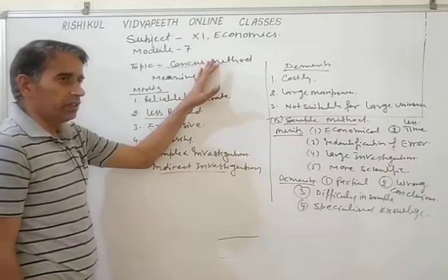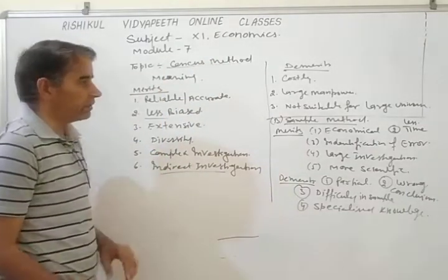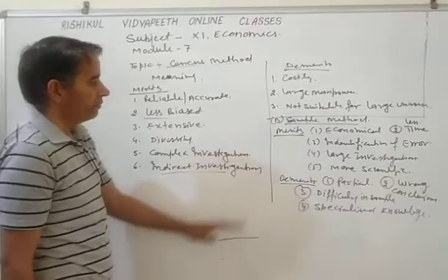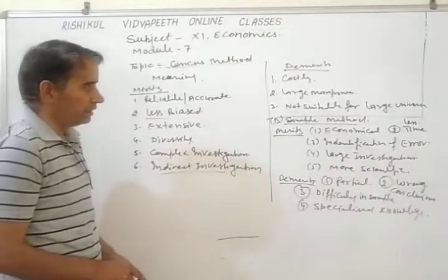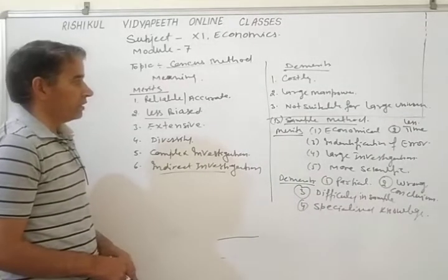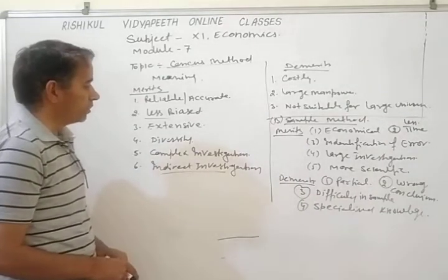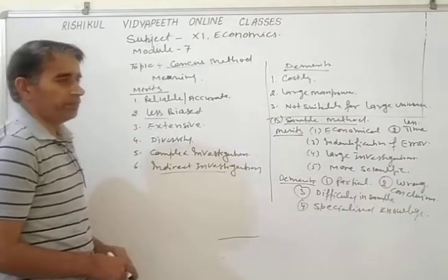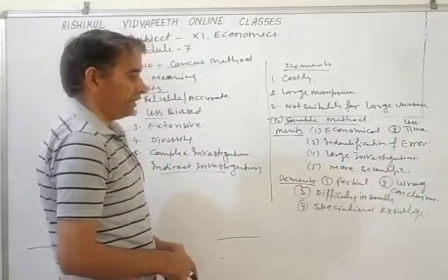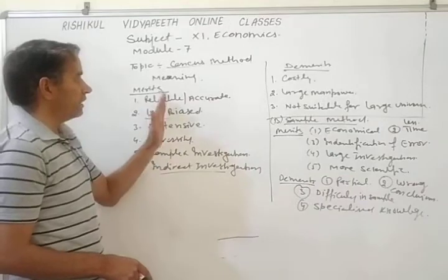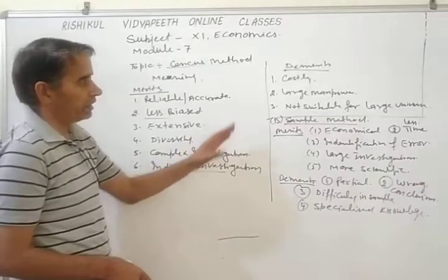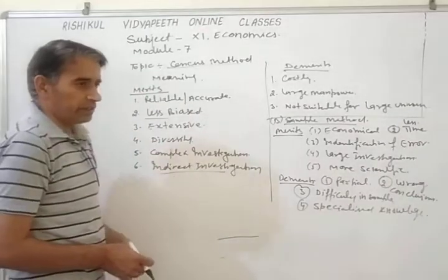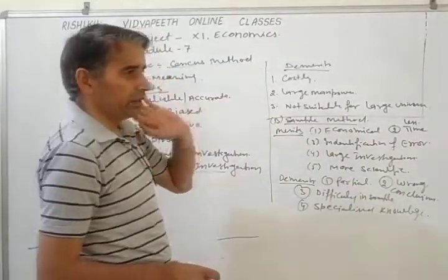On the basis of extensiveness, census method is used for extension of areas — not only objective information but additional information is also collected — whereas there is less extensiveness in sample method. Sample method is more scientific but census method is not so much scientific. Under census method more manpower is required, but under sample method less manpower is required. There is less chance of biasness under census method but more chances of biasness under sample method. Thank you.